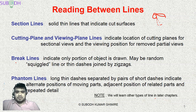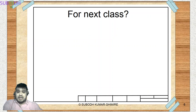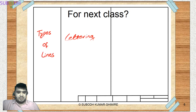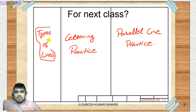The construction line is a very light angle-type line. When you look at construction lines, you can see them used as guide lines in the drawing process.